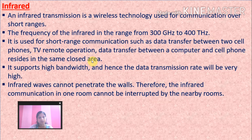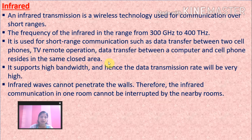Infrared is used for short-range communication such as data transfer between two cell phones, Bluetooth data transfer between devices, TV remote operation, and data transfer between a computer and a cell phone in the same closed area. It supports high bandwidth and hence a very high data transmission rate.